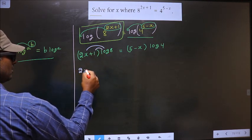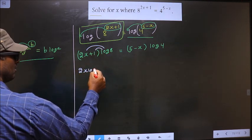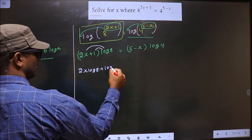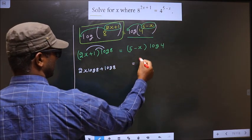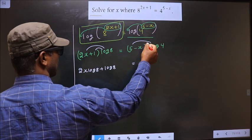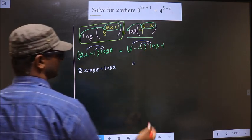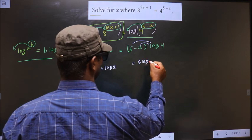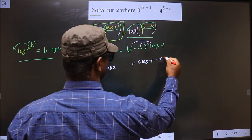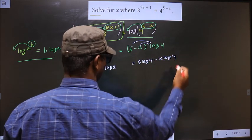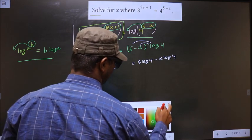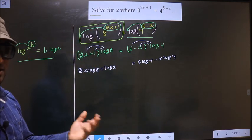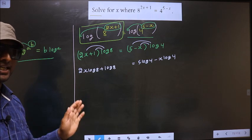Now we open up the brackets. On the left side we get 2x log 8 plus log 8. On the right side, opening the bracket gives 5 log 4 minus x log 4.